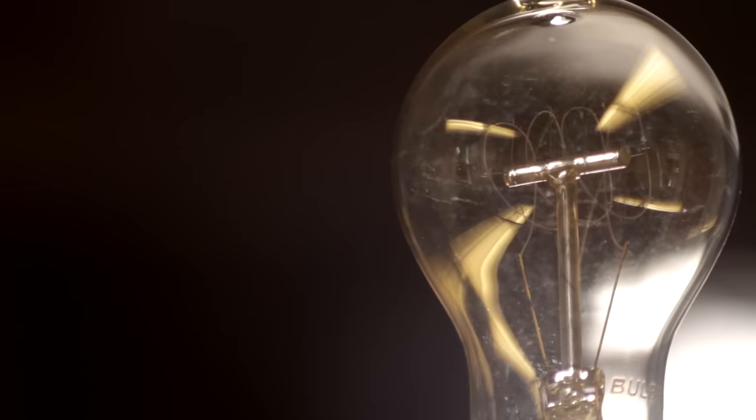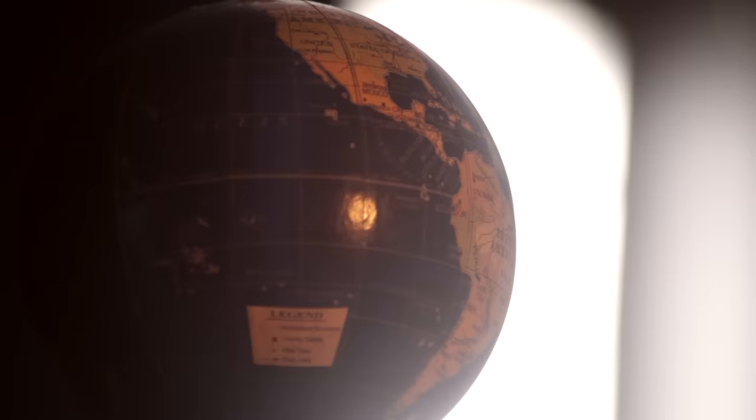You're gonna need a globe and a table lamp without a shade, plus a table to put them both on. Put the lamp in the center of the table and turn it on. Put the globe on one side of the table. Now hit the lights. The globe is Earth. Makes sense, right? The lamp at the center of the table is the sun at the center of the solar system.